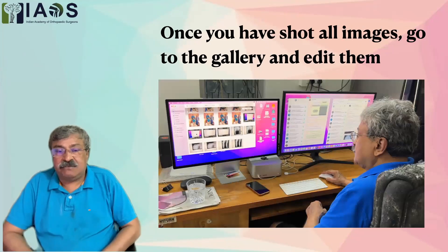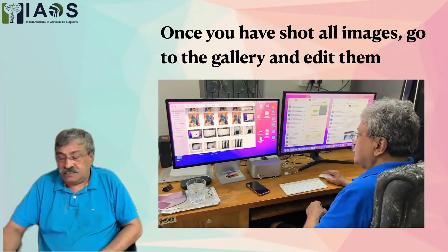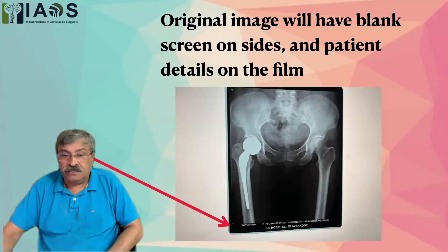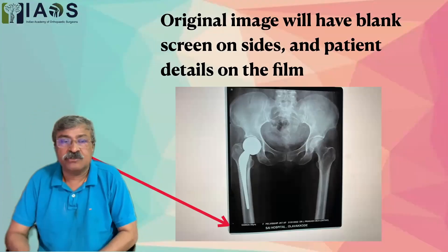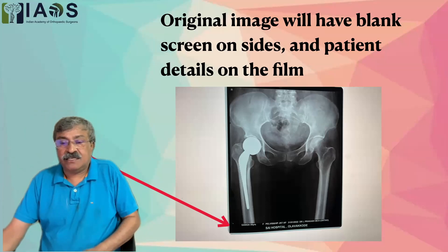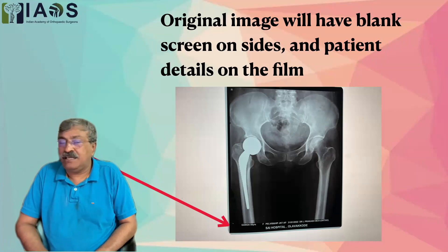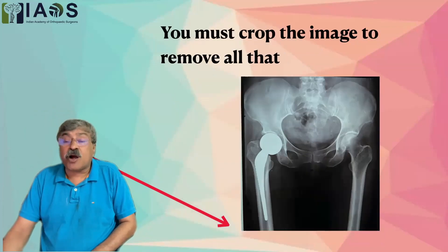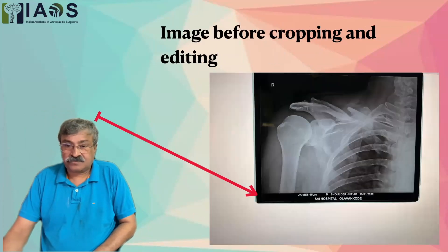Once you have shot all the images, go to the phone gallery or wherever they are stored, transfer them to the computer, and then edit the images one by one. In the original image you can see blank spaces on both sides and the patient's name and other details at the bottom, which should be avoided. You can see the arrow pointing to the patient's name, hospital name, age, and other confidential data — that should be removed. Crop the image using editing software to remove all non-essential data while highlighting the essential data.